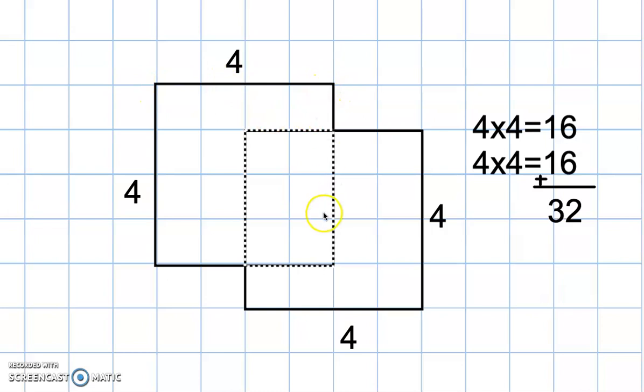I've already counted it with this square in the back, and then I've counted it again with this square, so I'm going to need to get rid of one of those.